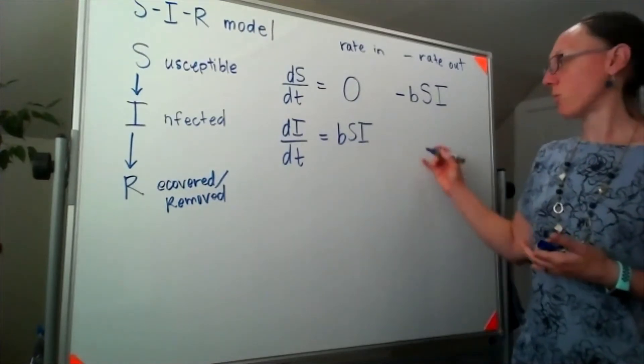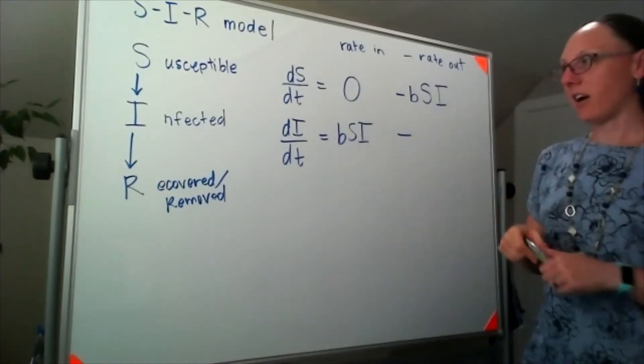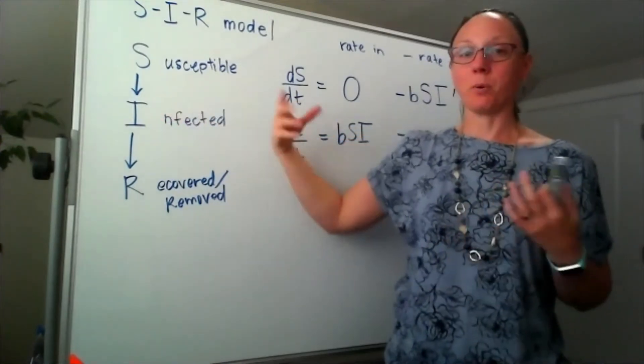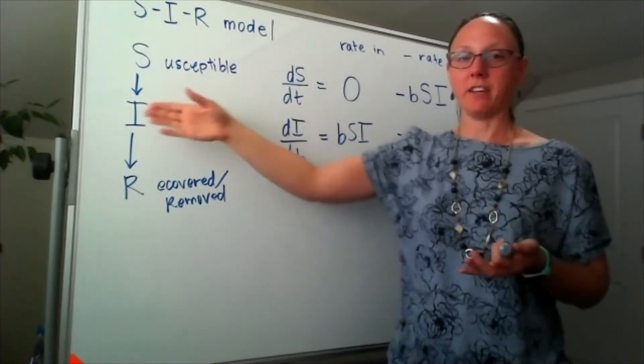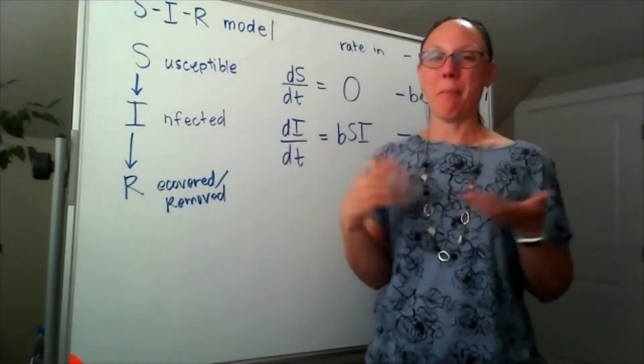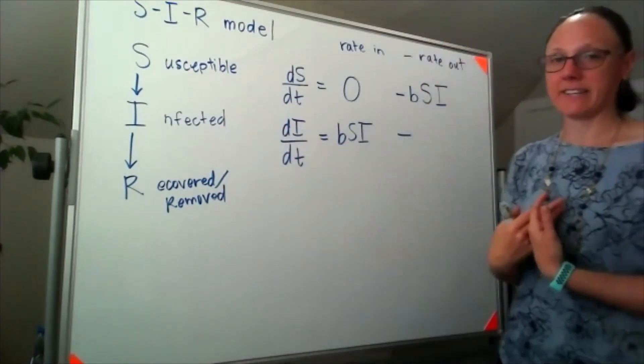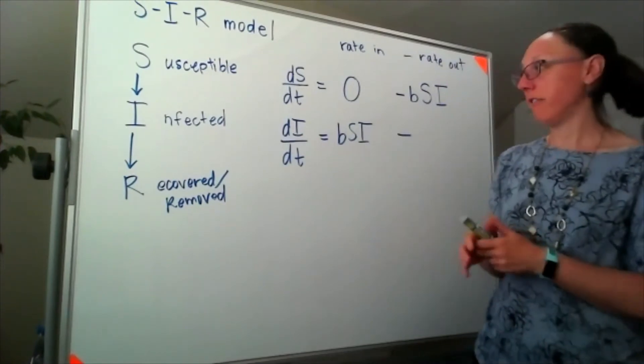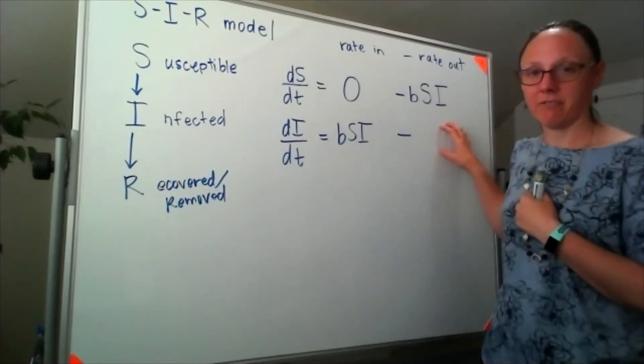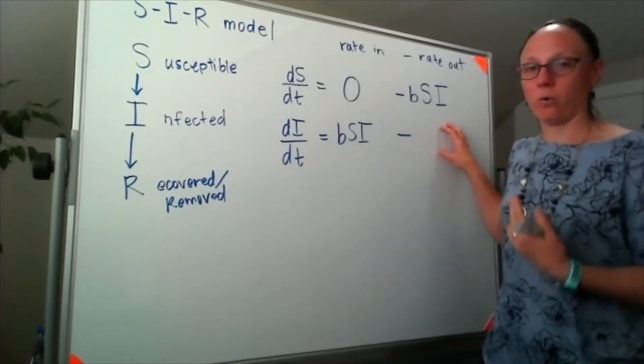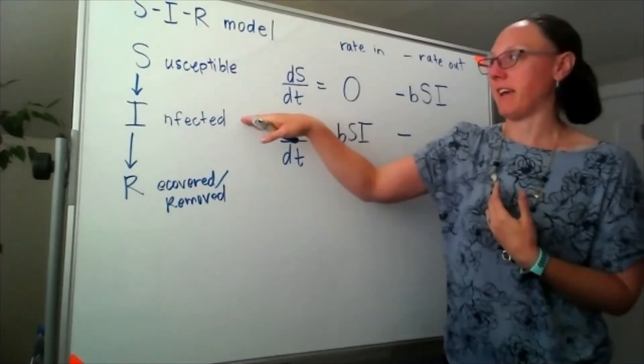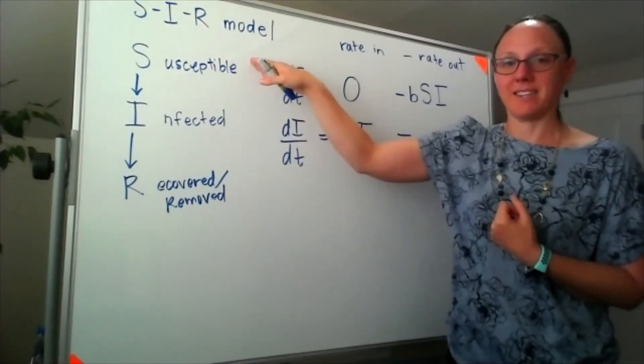Now in terms of the rate out, here we want to think about - a certain percentage of the individuals who are infected will recover. The underlying assumption here is that we can't move out of the infected phase and back into being susceptible. We can only move out of the infected phase and into the recovered, which means we need another constant.